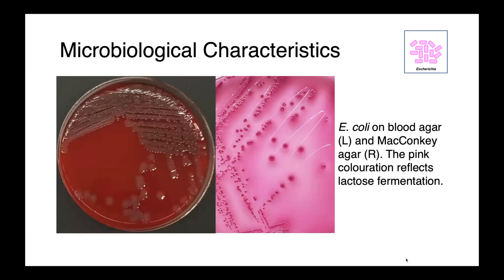Here you can see E. coli growing on blood agar — these sort of flat, roughly round, non-hemolytic colonies in this particular case, although some E. coli are hemolytic. And then on the right, we have E. coli growing on MacConkey agar. MacConkey is selective for gram-negative enterics and differentiates bacteria based on their ability to ferment lactose. So as a lactose fermenter, E. coli grows as these bright pink colonies.